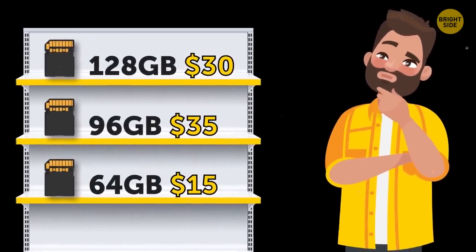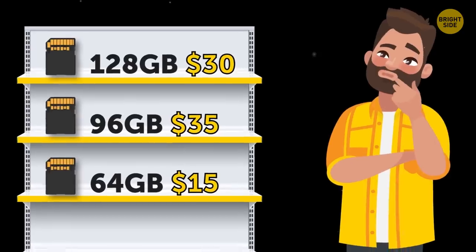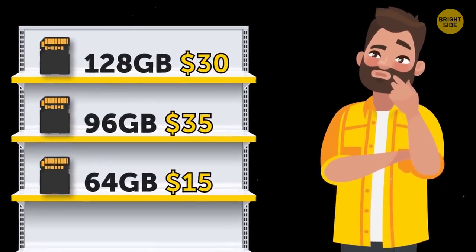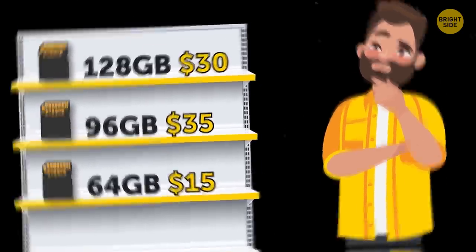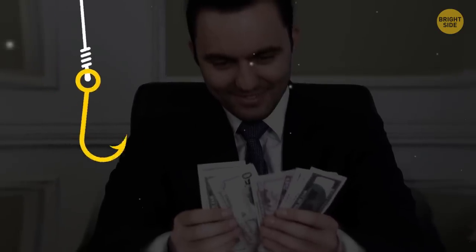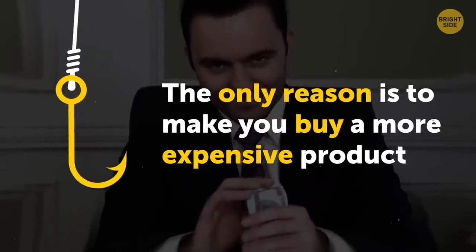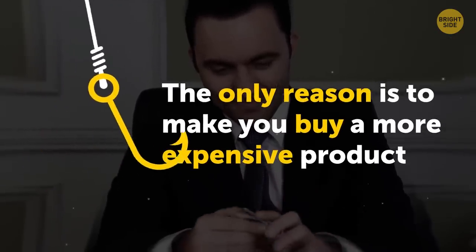The 64 GB card, though, is only cheaper than the 96 GB one, but its capacity is lower. It's kind of obvious that you would choose the best one, right? Well, marketing specialists got you there. The only reason why there's this third option on the market is to create this decoy to make you buy a more expensive product. Insidious.